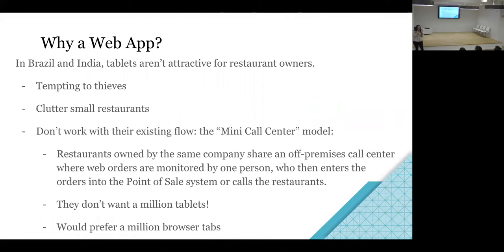A lot of the restaurant owners don't want to have them. From our perspective here it's like, oh wow, it's so nice to have a tablet, but they don't want that. What they actually do — which is really different than how restaurants operate here — is you could have a small restaurant chain with like 10 locations, and then somewhere else in the city in some office, there would be someone getting orders through different delivery options including Uber Eats. They would either enter it into their point of sale system or actually call up the restaurant. They're going backwards in terms of the technology, and they really don't want a million tablets. They'd rather have one person sitting at a computer with a lot of browser tabs, clicking between them. So we had to make that solution for them.